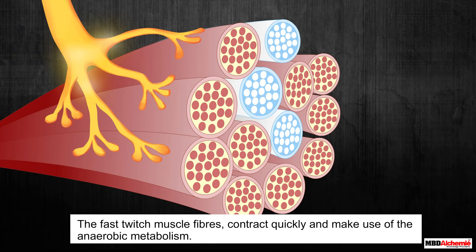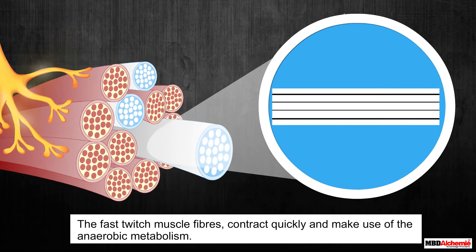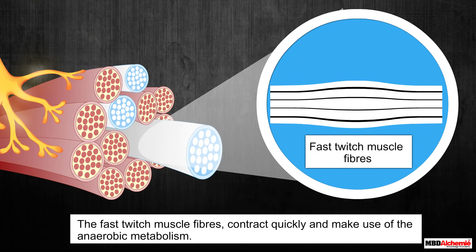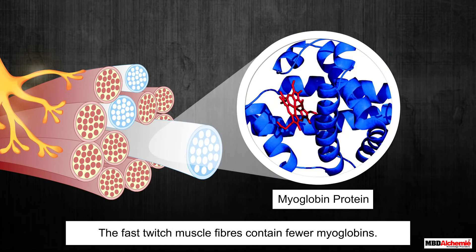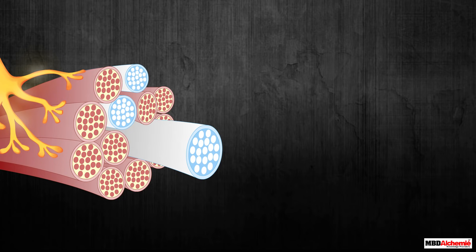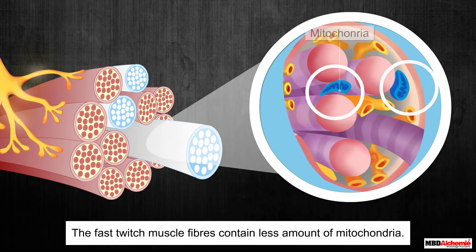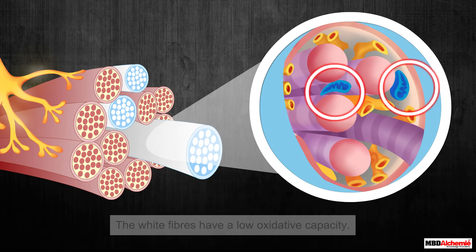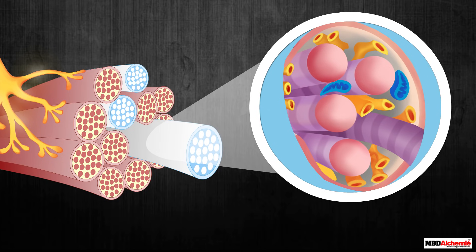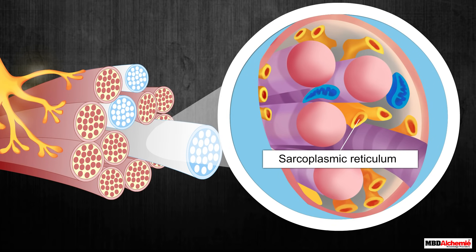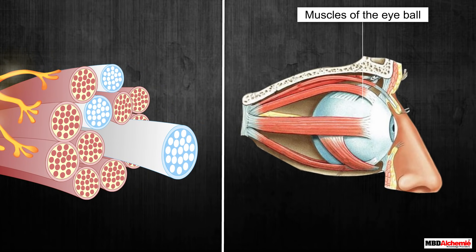Fast twitch muscle fibers, on the other hand, contract quickly and make use of anaerobic metabolism. They generally contain fewer myoglobins, so they appear pale or whitish and are also known as white fibers. The number of mitochondria is also few, giving them a low oxidative capacity. However, the amount of sarcoplasmic reticulum is high in white fibers. An example is the muscles of the eyeball.